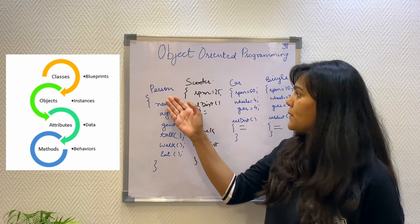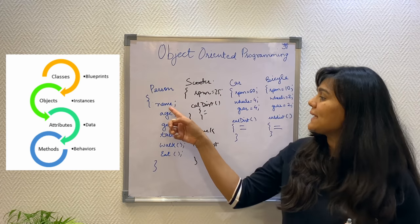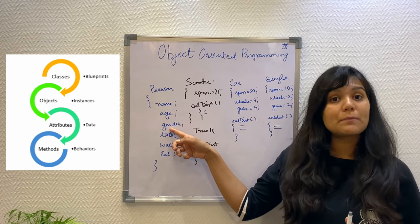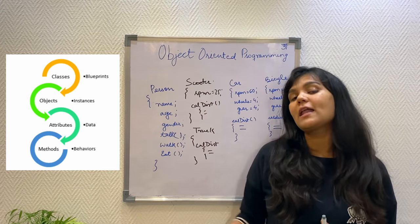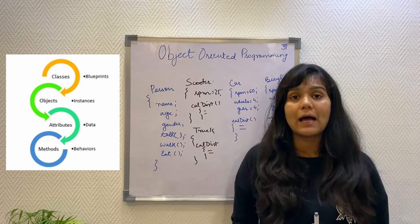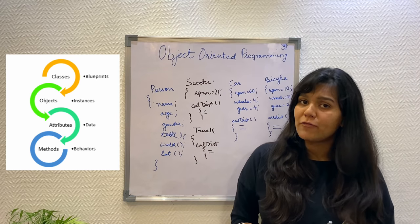I, for example, as a person can have properties like name, age, gender and can behave by talking, walking and eating. Similarly, this plant can have properties like length, color, name and can have behaviors like growing.